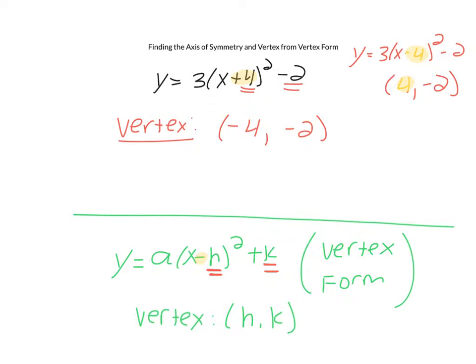So this is the vertex. The vertex would be negative 4, negative 2. If I asked you what the axis of symmetry would be, it's actually a very easy question to answer because you already have the vertex.